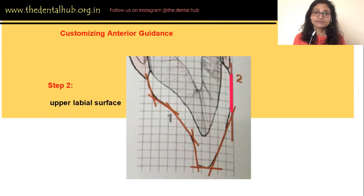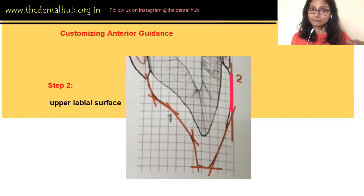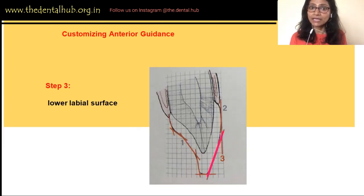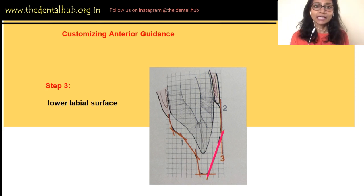Then we go to the labial surface, starting from the apical half. It should follow the slopes of the alveolar process very smoothly so that when the upper lip moves, it finds no hindrance. Then we address the area where the lower lip moves superiorly to contact the upper lip to form a seal — this too should encounter no hindrance.